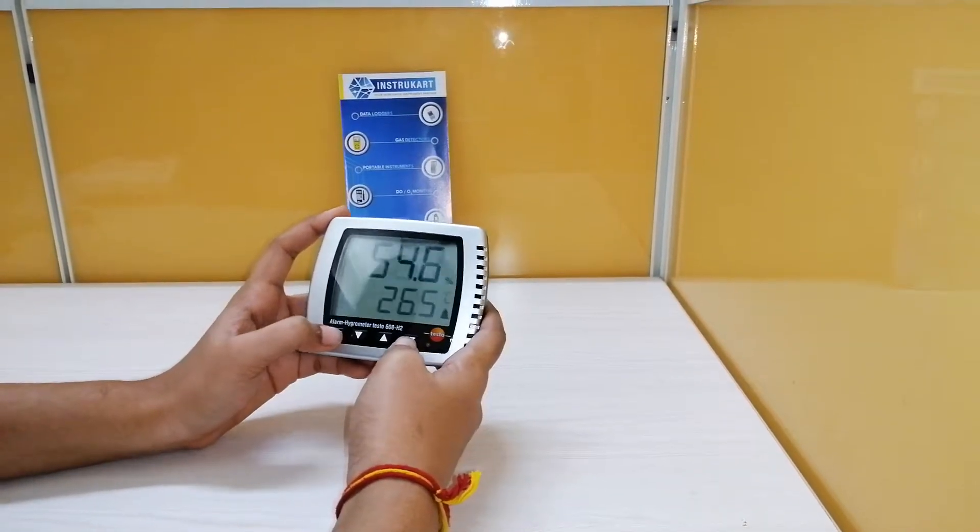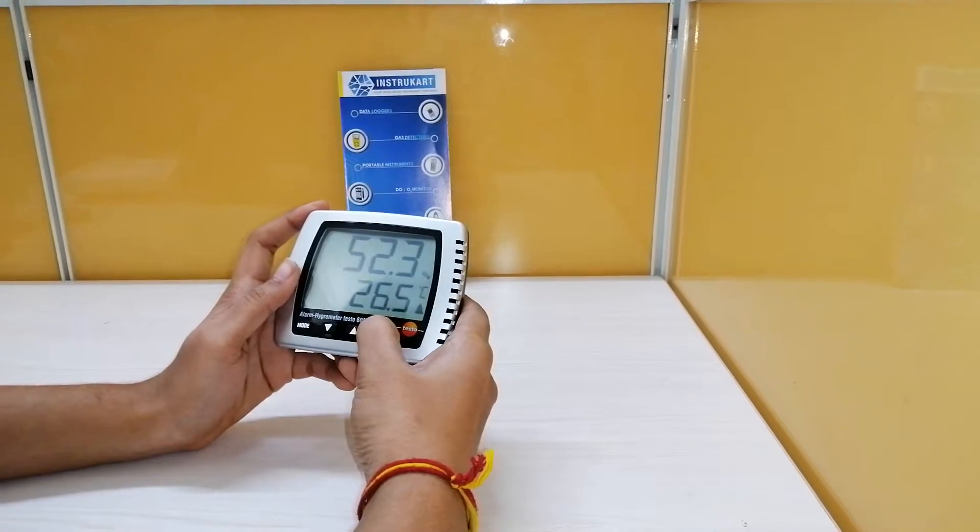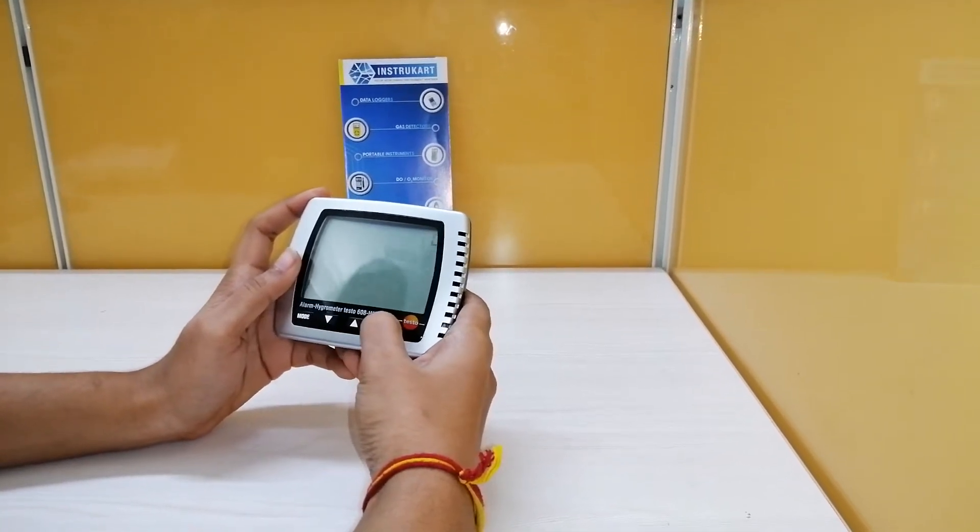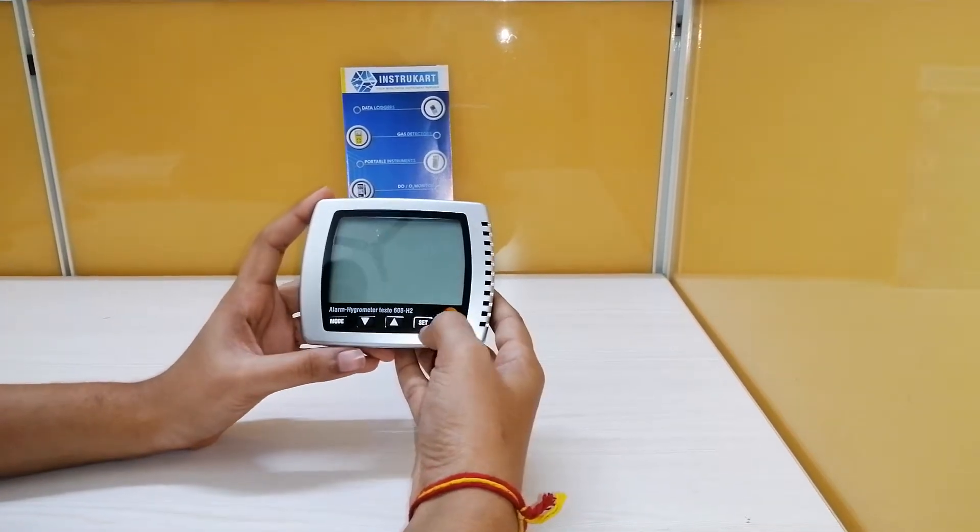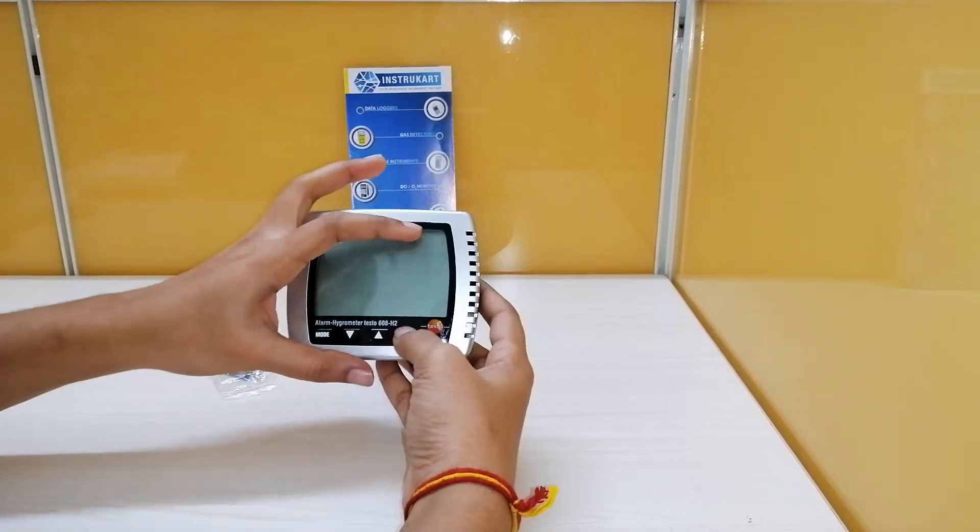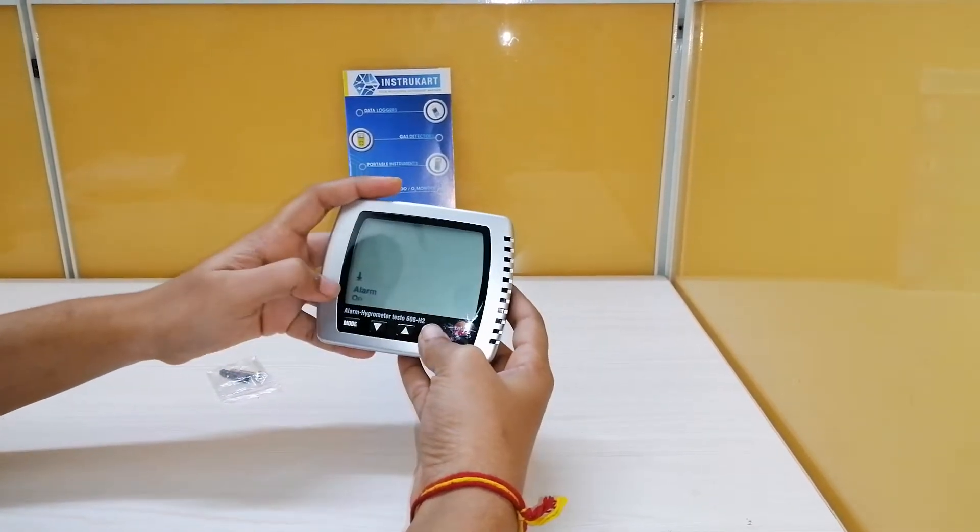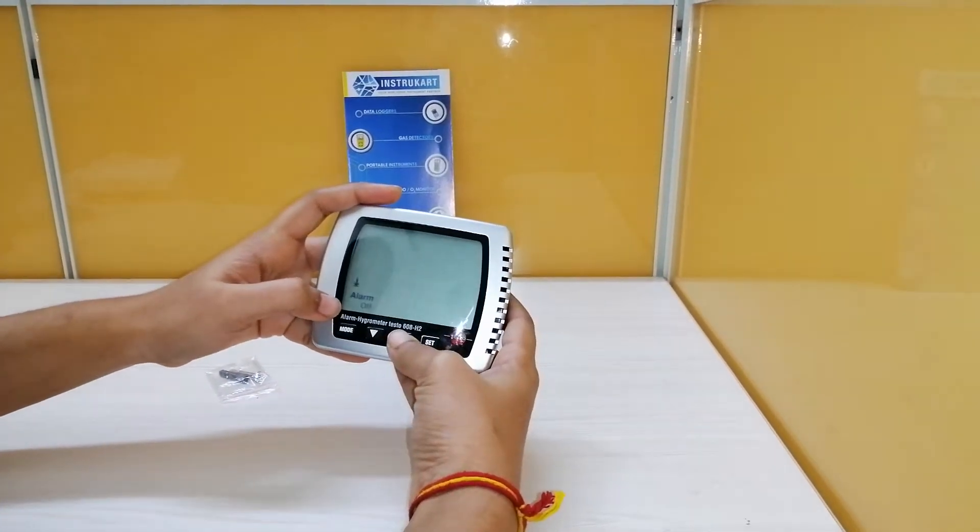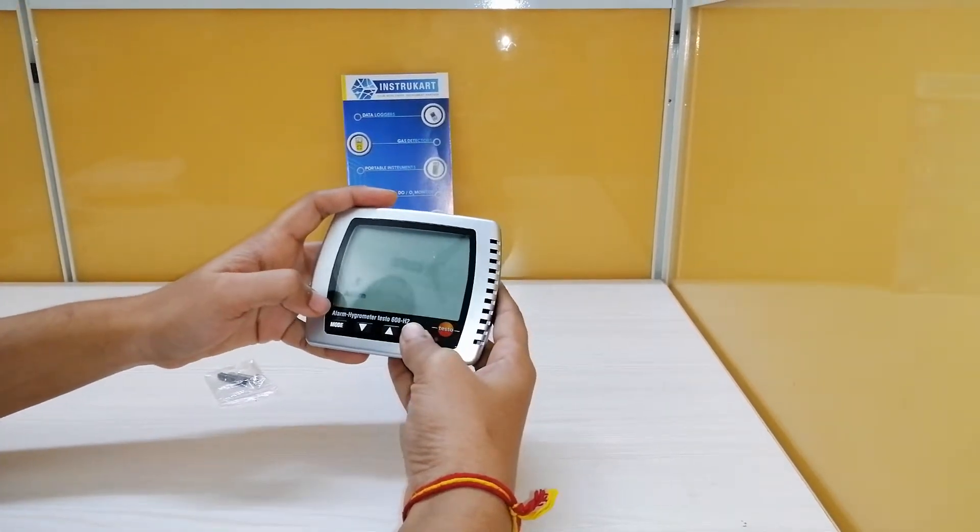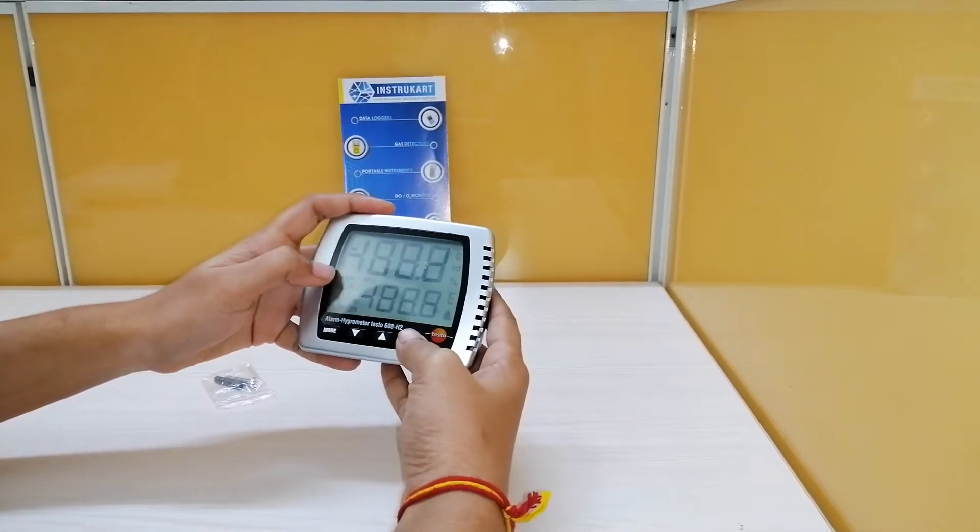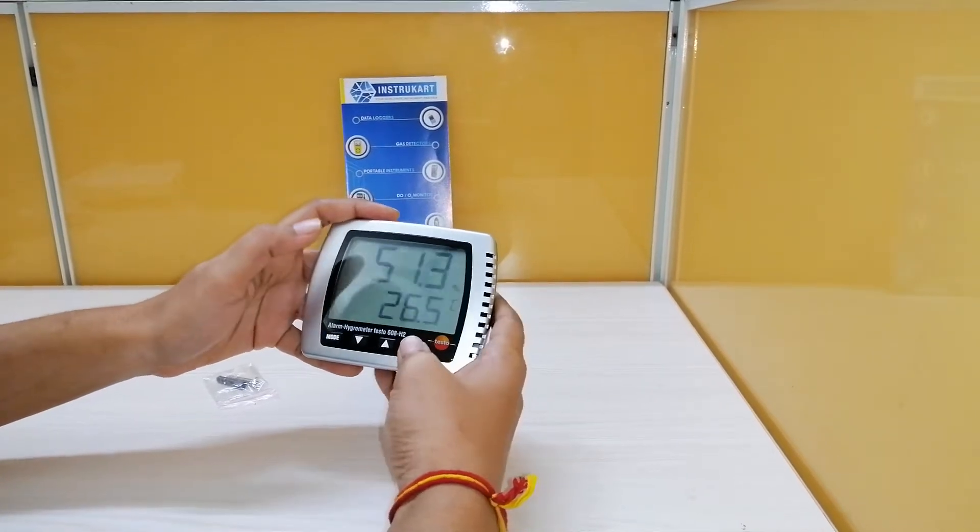If you see here, pressing the set button continuously, you can change alarm on, now it is off, this is the limit, downward limit and upward limit.